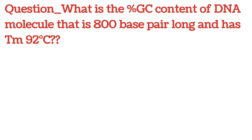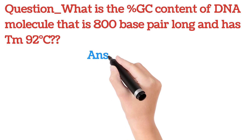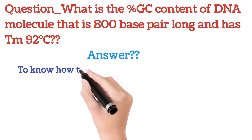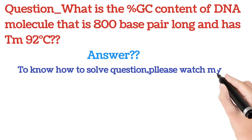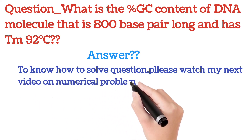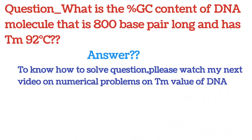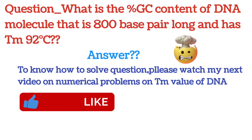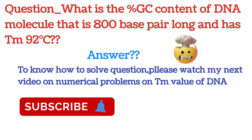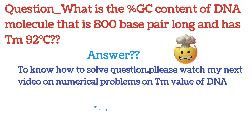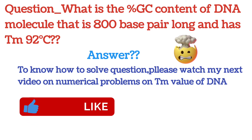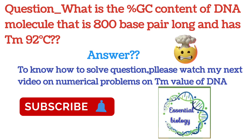Now let's look at a sample question: what is the percent GC content of a DNA molecule that is 800 base pairs long and has a Tm of 92°C? To learn how to solve this and other numerical problems on Tm value, please watch my next video on numerical problems on Tm value. Please like and subscribe to my channel, Essential Biology. Thank you.